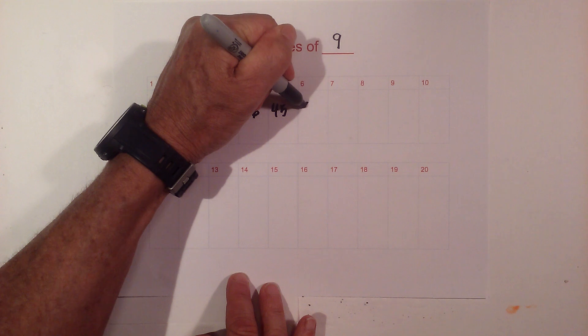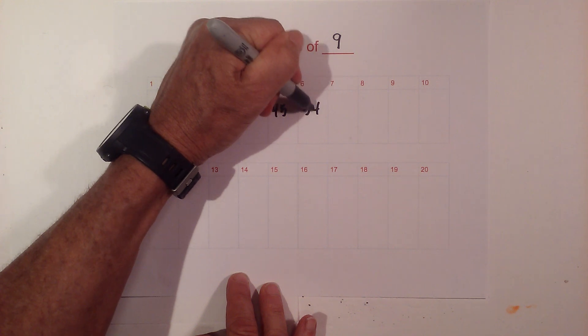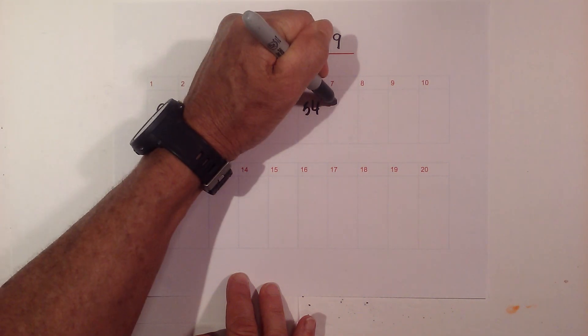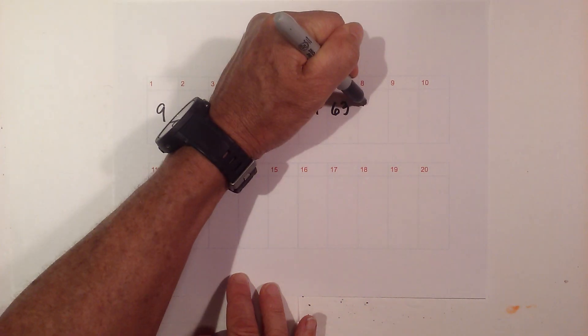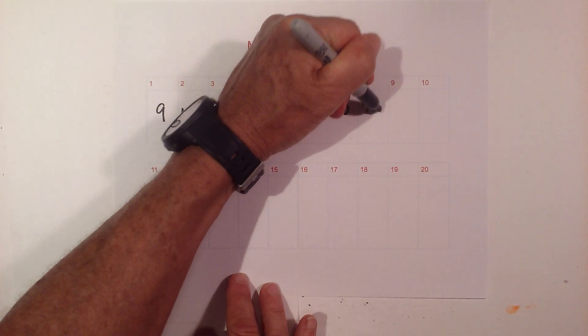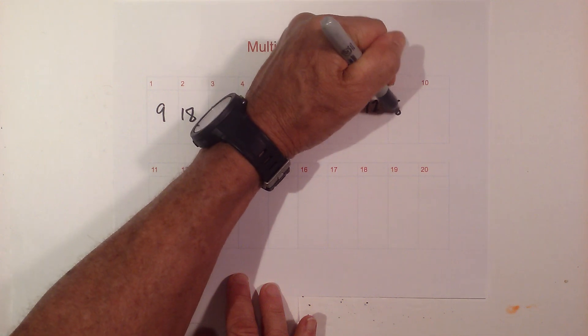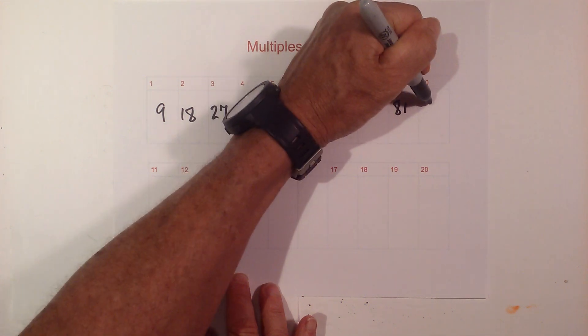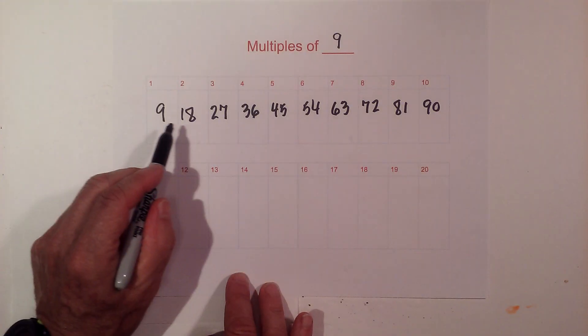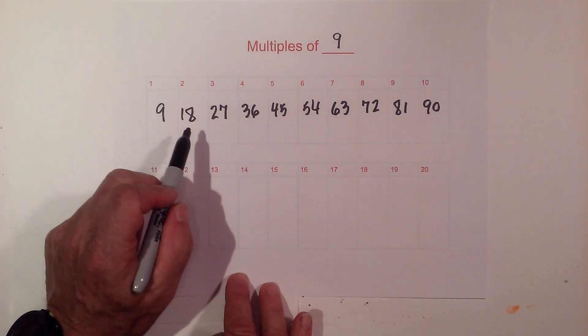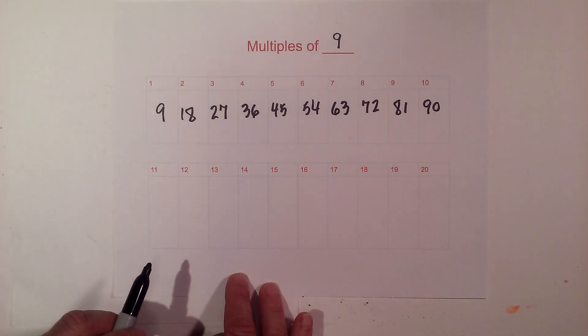45, 54, 63, 72, 81, and 90. Again, notice that it goes up by 10 and down by 1.